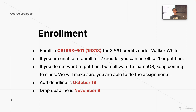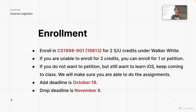For enrollment: please enroll into section 601 under Walker White — that number there is the access code. The add deadline is actually a bit later than the typical add deadline. You can still enroll in Student Center. It is a two-credit class, but if you're over the credit limit you can opt in for one credit or even audit it for zero credits. The add deadline is October 18th and the last day to drop is November 8th.